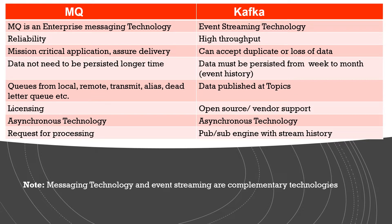Third option is that if you have a mission-critical application and guaranteed delivery, then those kinds of scenarios you have to consider MQ. For example, in a healthcare system where two systems are interacting with each other and a doctor in the surgery room is looking for data to help a patient — if data gets lost in that kind of scenario, it can affect the patient. So better go with MQ.